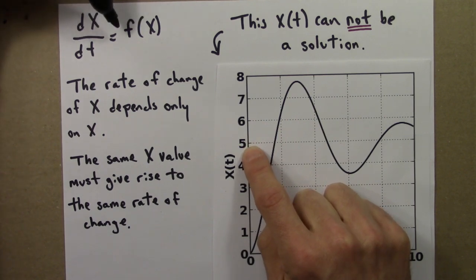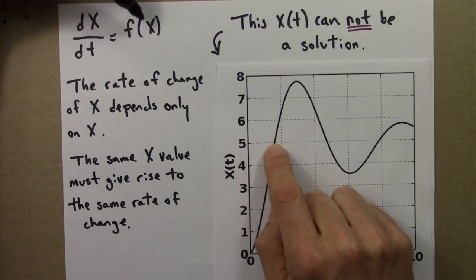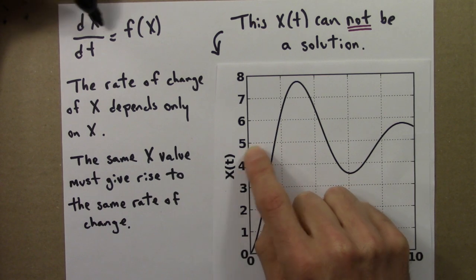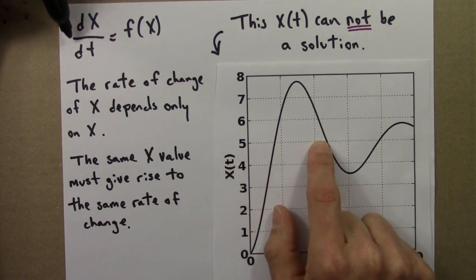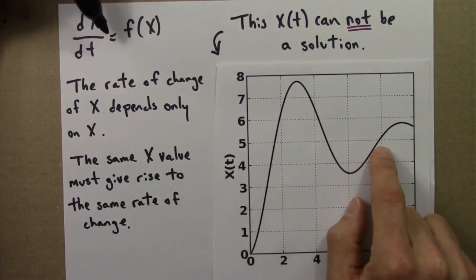But it clearly doesn't here. I put in 5 and I get a positive rate of change. I put in 5, I get a negative rate of change. Here I get another positive one, and so on.